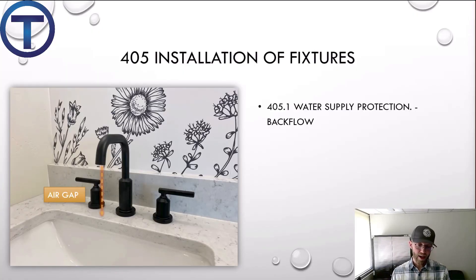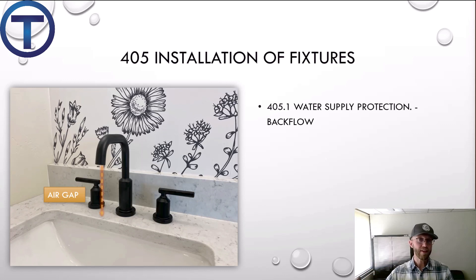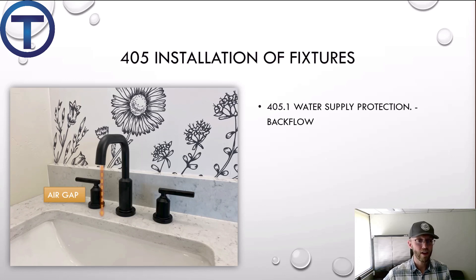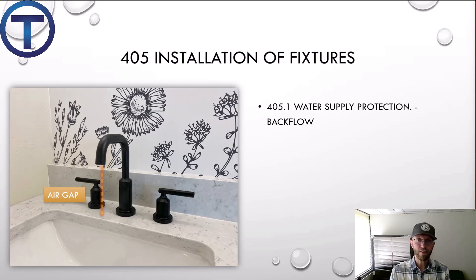405.1 talks about water supply protection. The point of all this is that you have potable water — that's something you can drink, something safe to use that's not going to get you sick. But it would be a bad thing if the drains that these faucets or fixtures are connected to could somehow contaminate the potable water. To avoid that, backflow protection is an integral part of every fixture — it is required. The fixture is designed so that backflow cannot happen and drains cannot contaminate water lines.